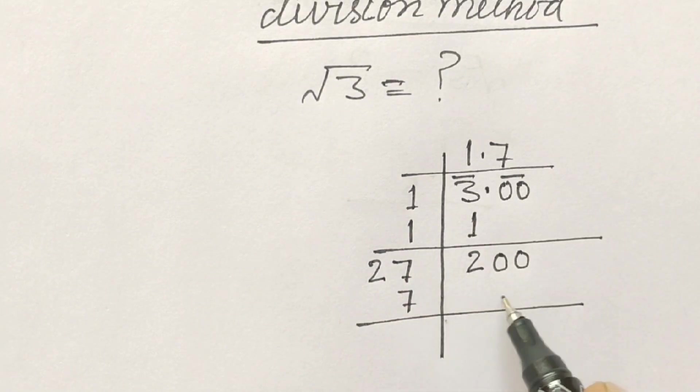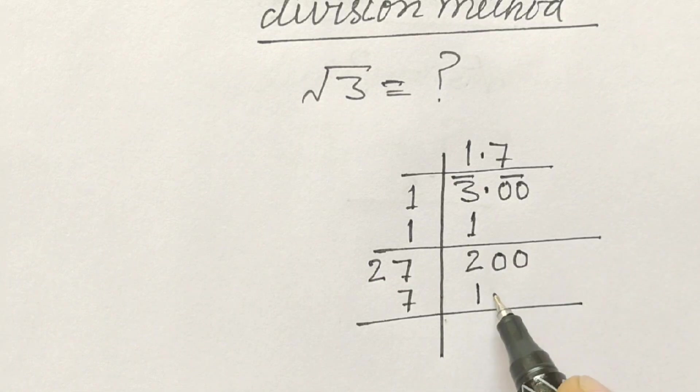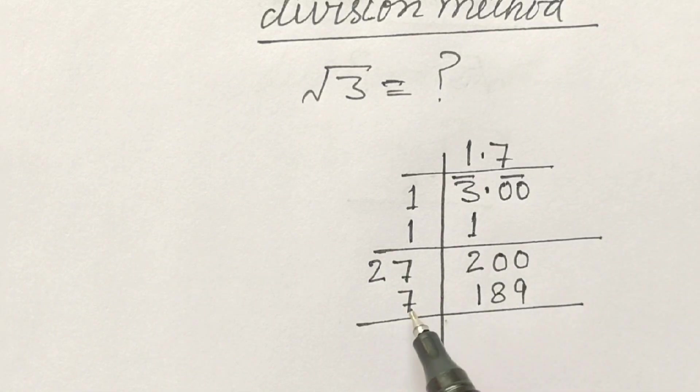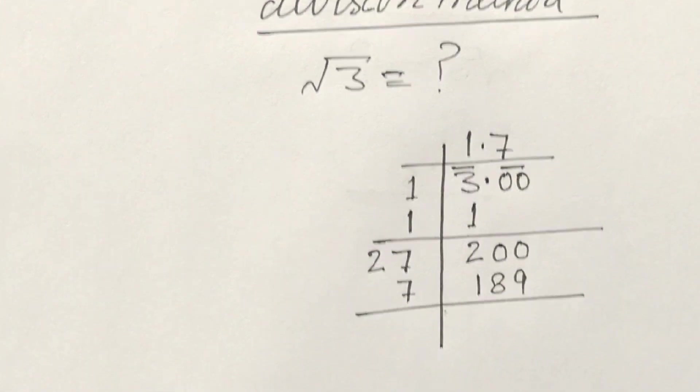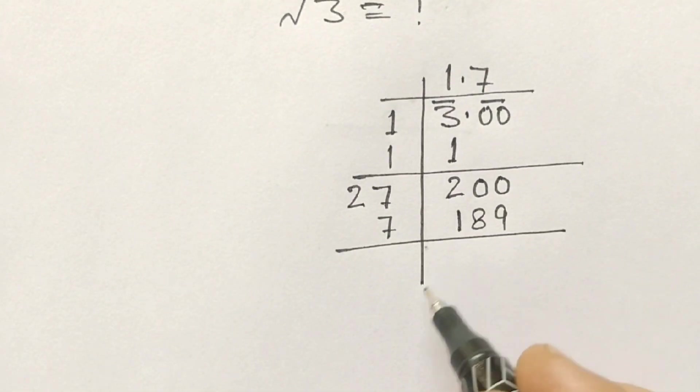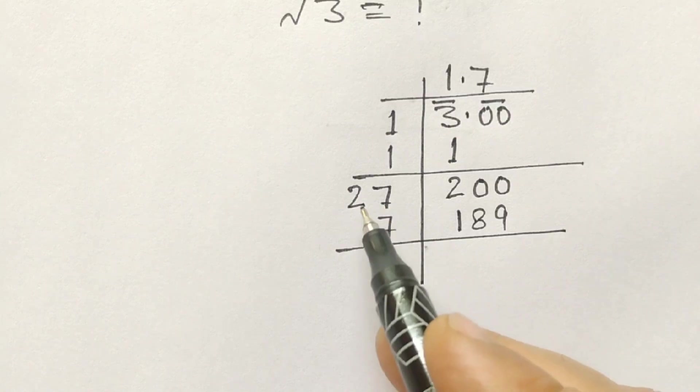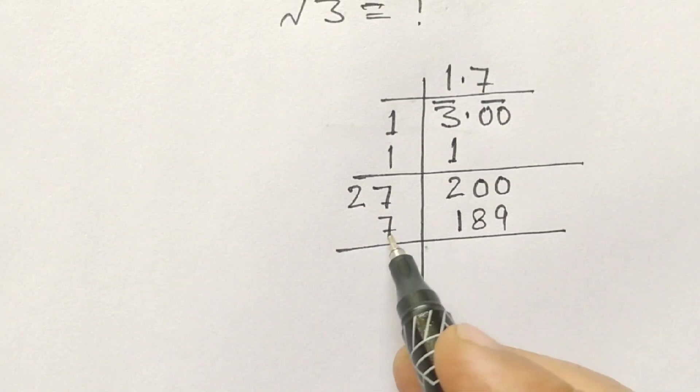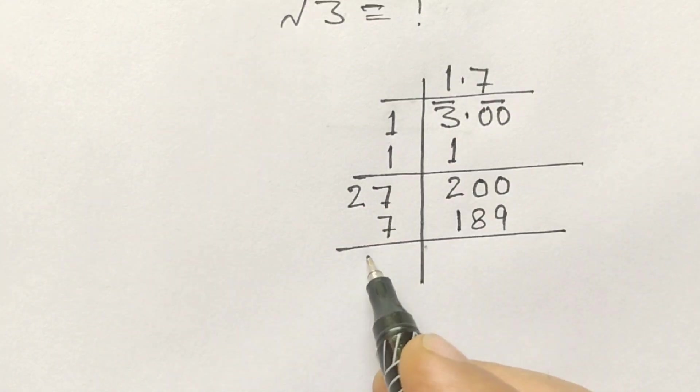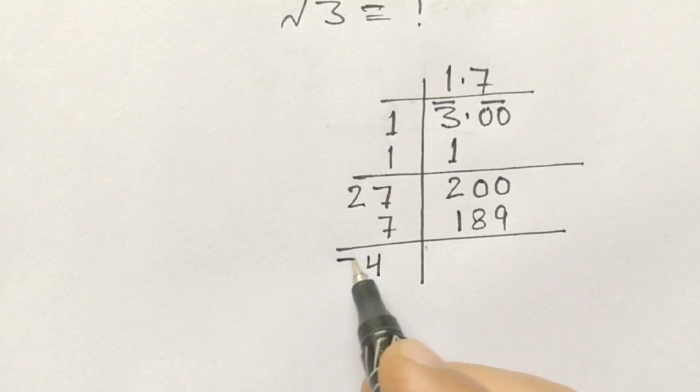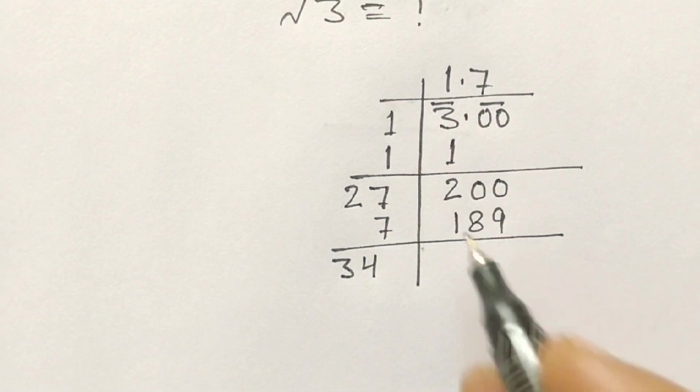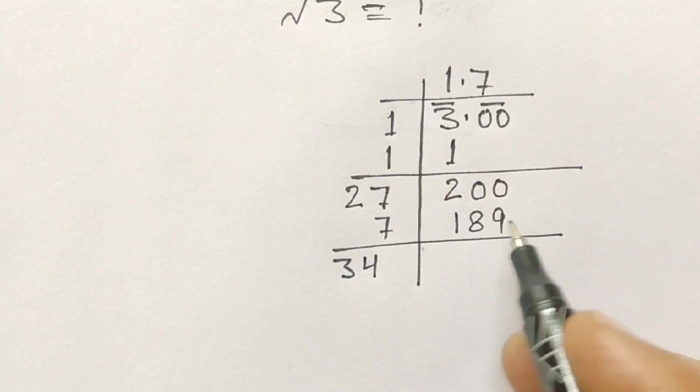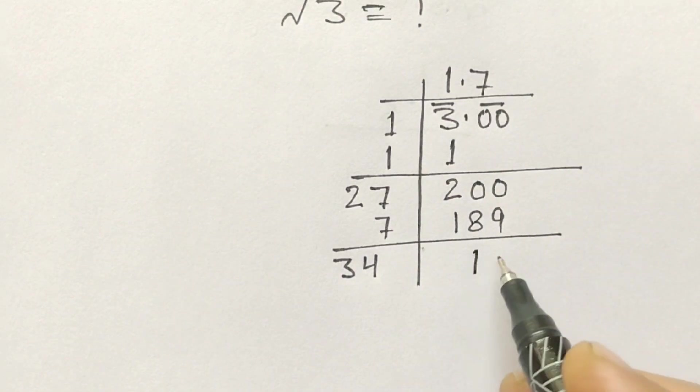And 7 here also. Now 27 gets multiplied by 7, so we get 189. 7 times 7 is 49, 7 times 2 is 14, and 18. Next, now we will add 27 plus 7, 7 plus 7 is 14, and 3 is 34.